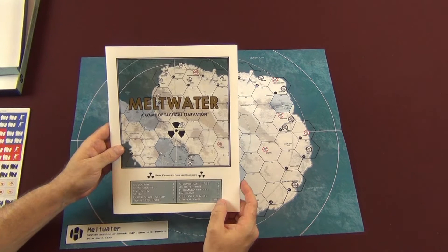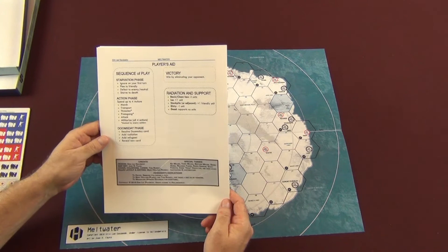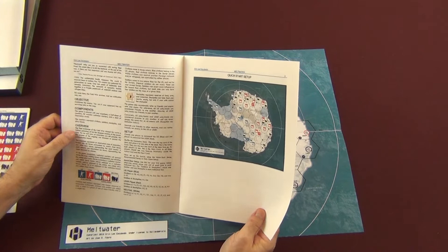Let's take a look inside the rule book. It is a very short and concise rule book, only five pages. And you have a player aid on the back, a very simple sequence of play and your victory and radiation and support laid out for you.